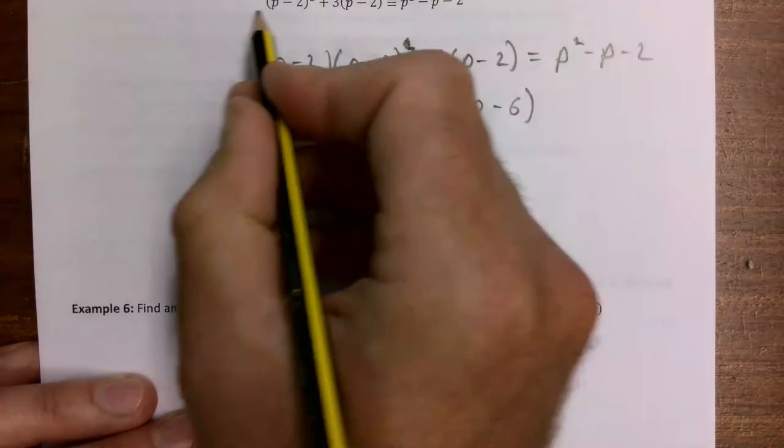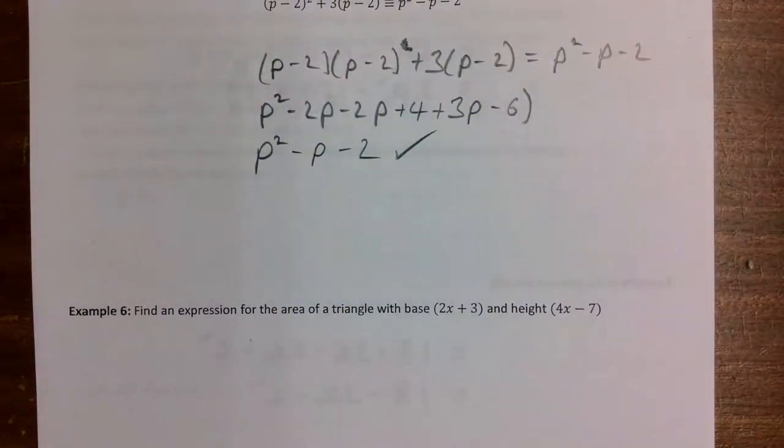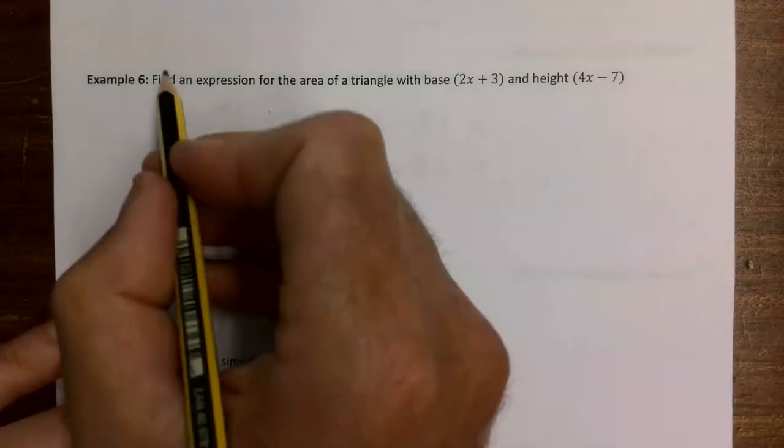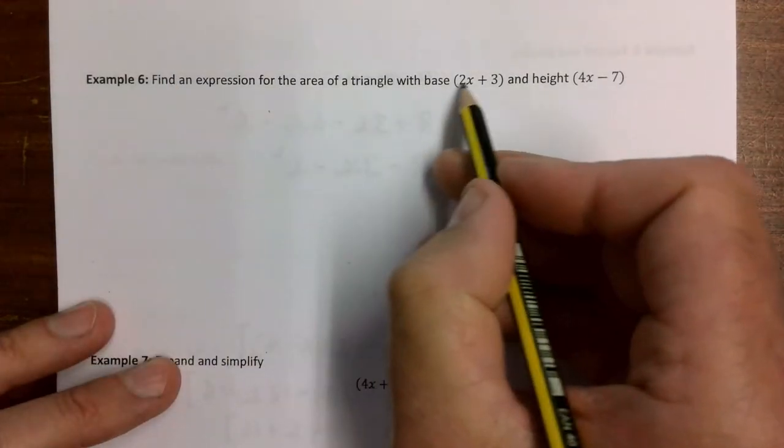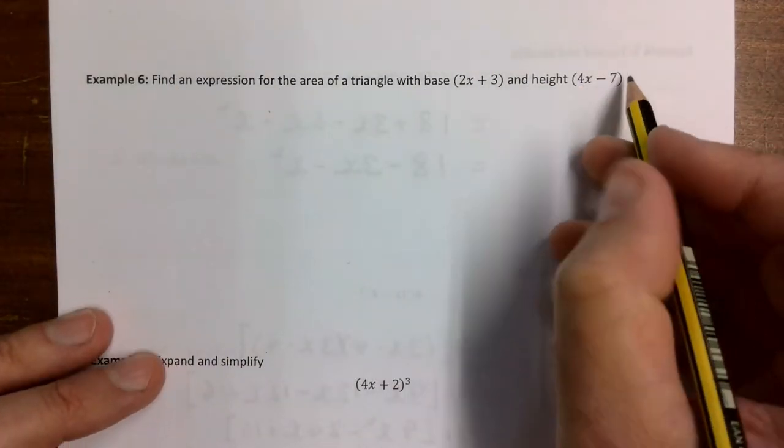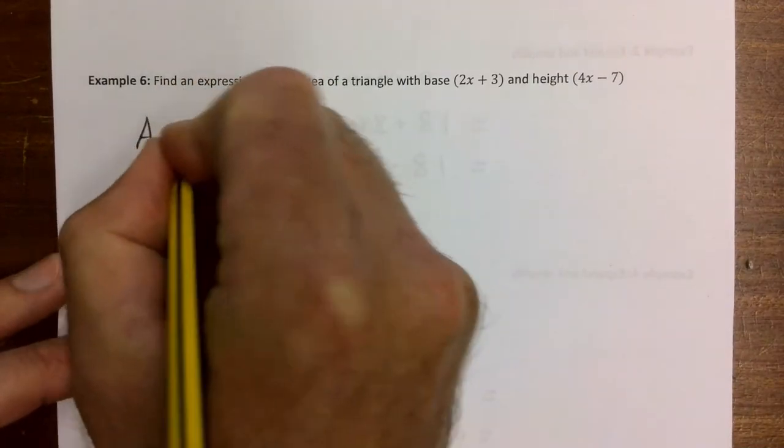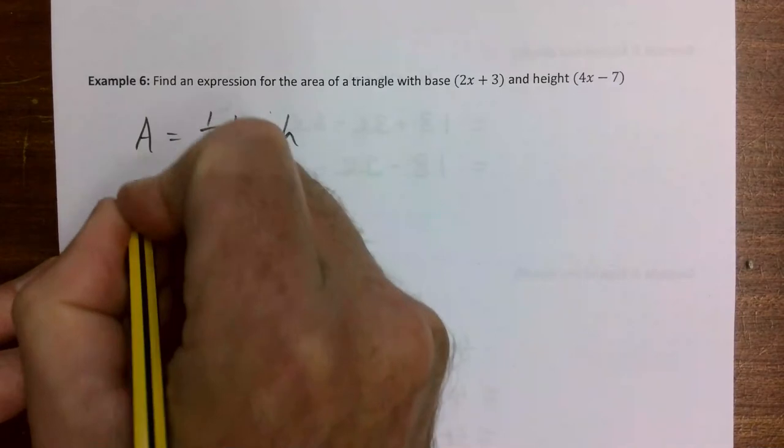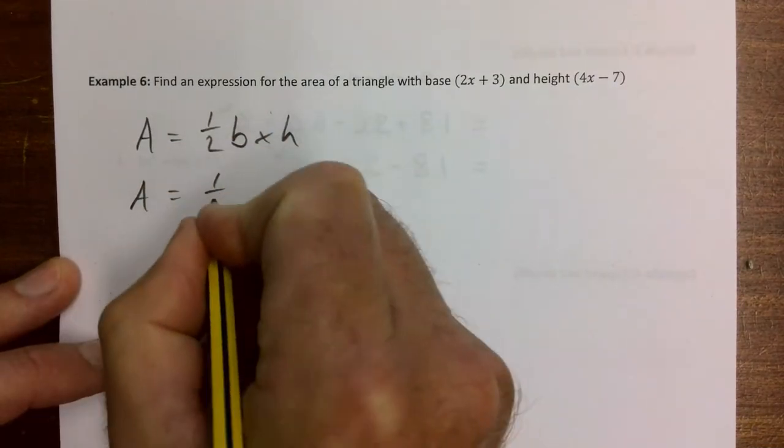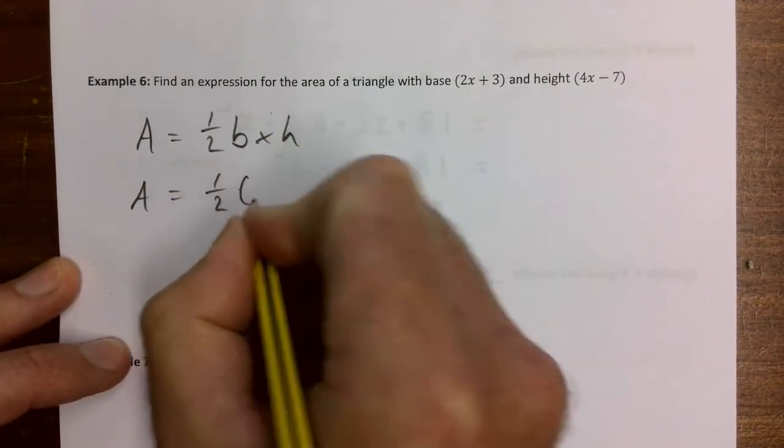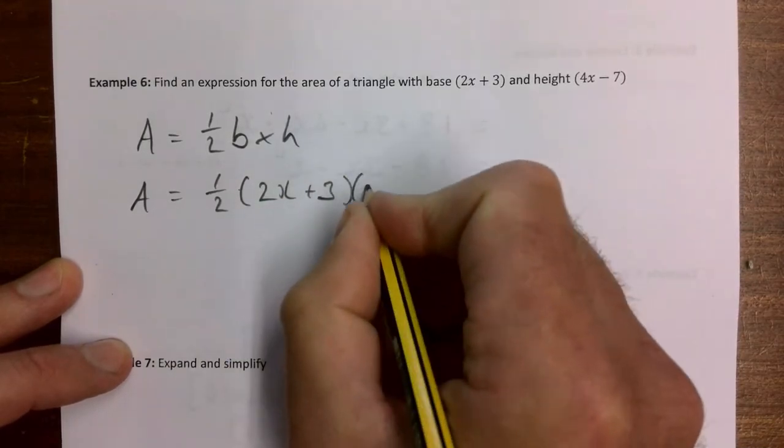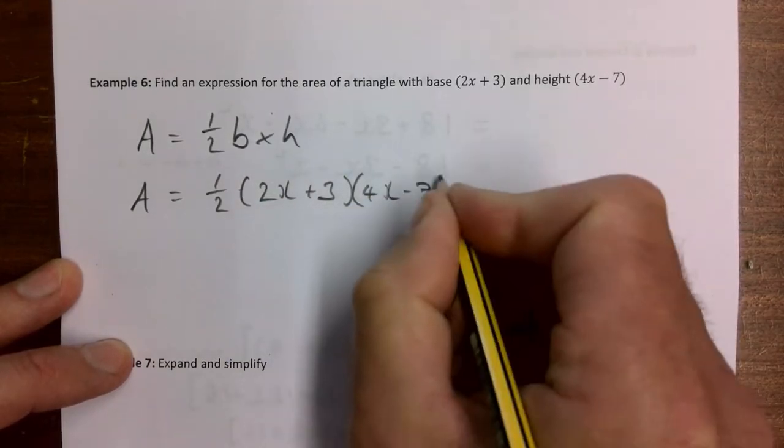I'm showing that the left hand side does indeed equal the right hand side. Let's look at example 6: Find the expression for the area of a triangle with base 2x plus 3 and height 4x minus 7. Our area of a triangle we know is a half base times height, or a half bh. That means we're going to do a half times (2x plus 3) times (4x minus 7).